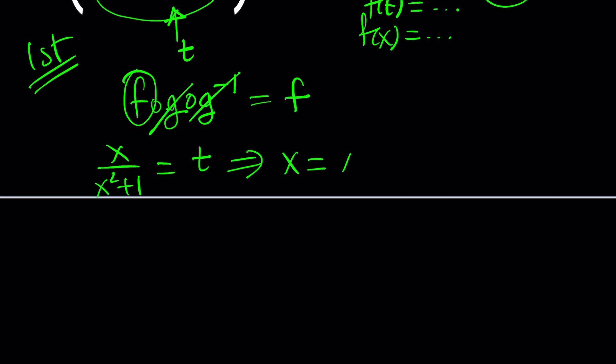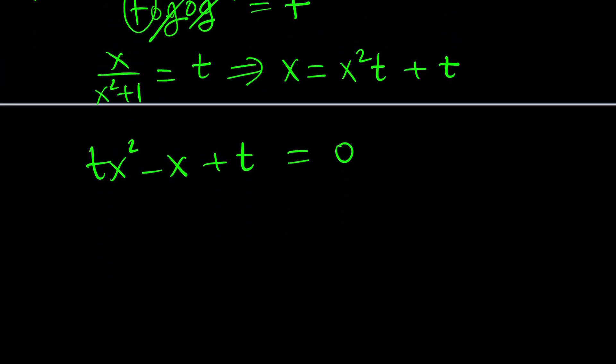x equals x squared t plus t. I want to bring everything together like this: tx squared minus x plus t equals 0. Notice that this is quadratic in x, so the solution will involve two solutions. Does that make sense? I mean, there will be two solutions. That's what I meant. So there will be two roots. Which one are we going to use? Does it matter? It shouldn't. Let's just use one of them. You can always check the other one.